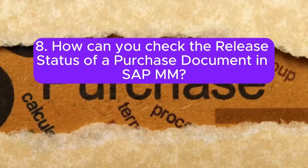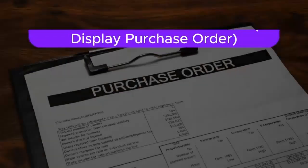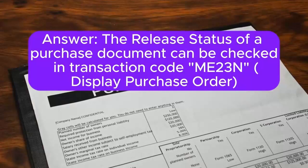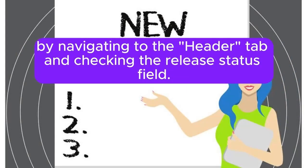Question 8: How can you check the release status of a purchase document in SAP MM? Answer: The release status of a purchase document can be checked in transaction code ME23N, display purchase order, by navigating to the header tab and checking the release status field.